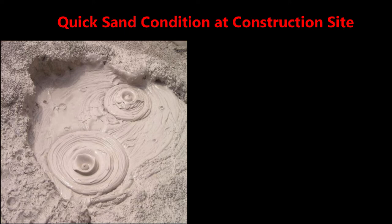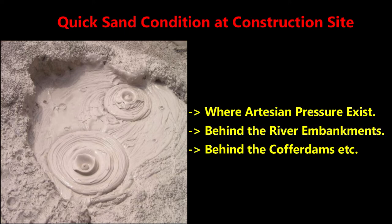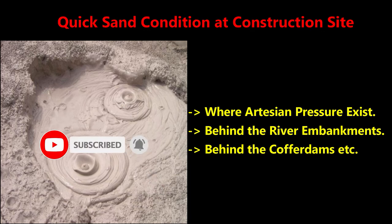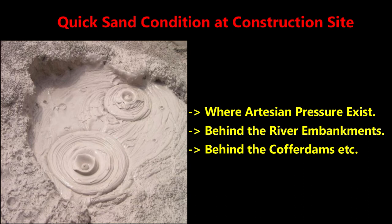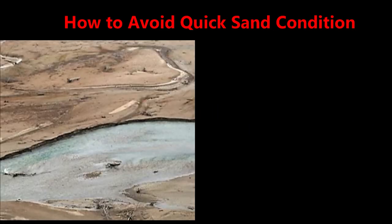Next, quicksand condition at a construction site. The construction places where quicksand conditions can occur are any place where artesian pressure exists. When a pervious sand stratum underlies clay soil, artesian pressure exists. The higher artesian pressure in coarse-type sand is one of the most important reasons for development of quicksand condition, and also behind river embankments and excavation of granular materials alongside river beds or river banks, and behind cofferdams.